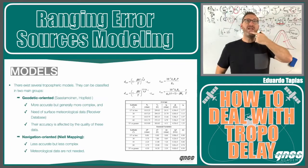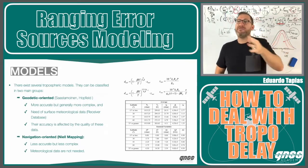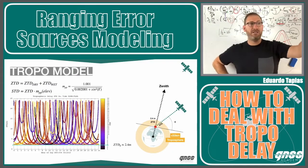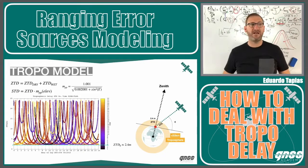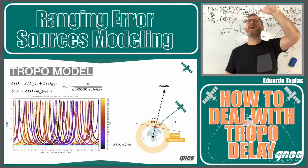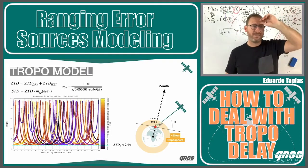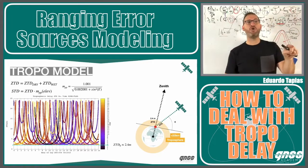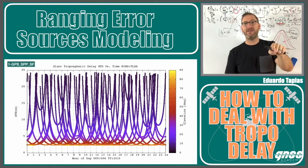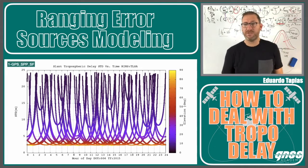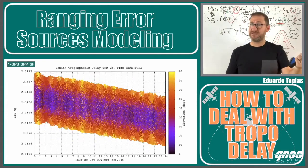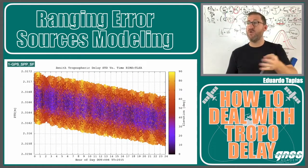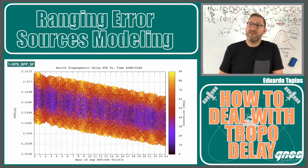We need to estimate the zenith tropo delay — not necessarily every second, we can estimate it every few minutes depending on the precision needed. The model has a dry part, a wet part, and the mapping function. When you apply the model, you get the delay in every single line of sight shown as a parabola. When the satellite is at its highest point — the zenith — you have the minimum troposphere, around 2.4 meters. Dividing by the mapping function converts slant delay to zenith tropo delay.